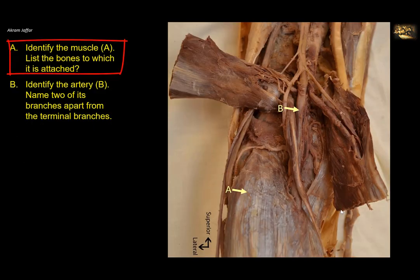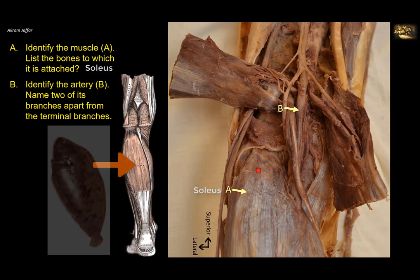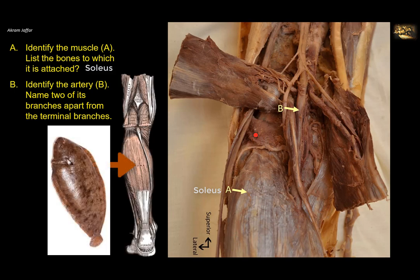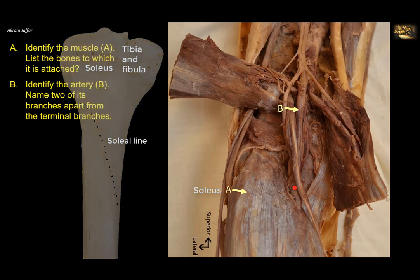Identify muscle A and list the bones to which it is attached. This is the soleus muscle, located on the back of the leg in the calf region. It is named not because it is in the sole of the foot but because its shape resembles a sole fish. It is attached to the soleal line on the tibia and also to the fibula. Between these two bones there is a muscular arch beneath which the neurovascular bundle passes.